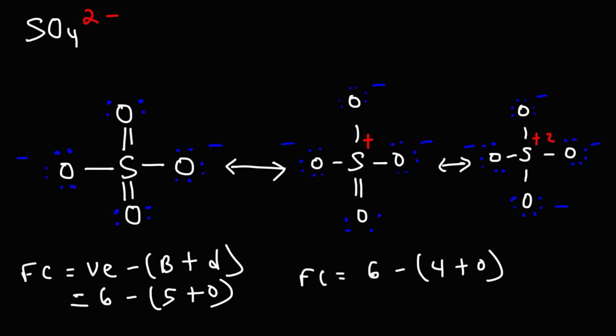But notice that the net charge is the same. If we take plus 1 and add it to minus 3, the net charge is still negative 2. If we take plus 2 and add it to negative 4, the net charge is still minus 2. So the net charge doesn't change. So all of these are acceptable Lewis structures of sulfate. But which one is more stable? Well, the answer is this one.